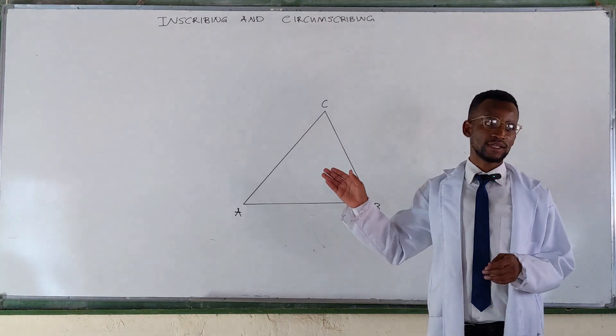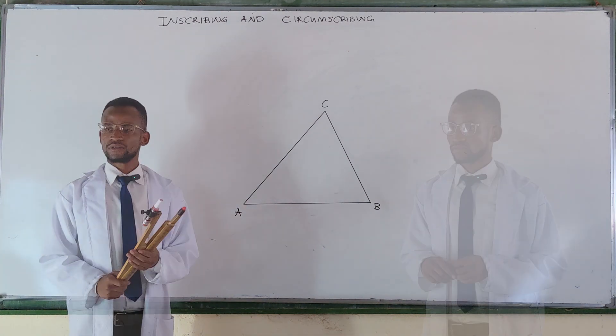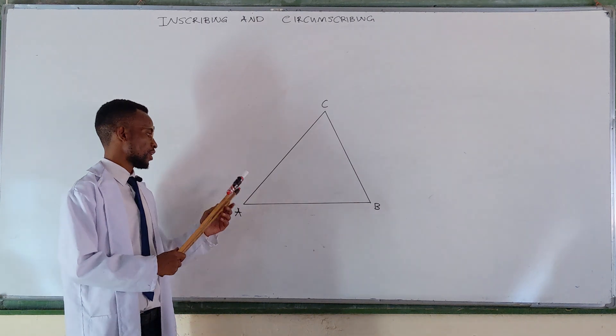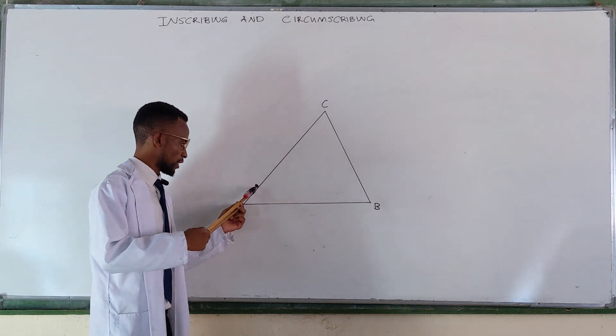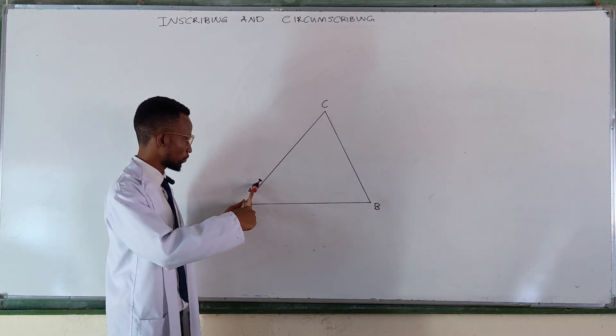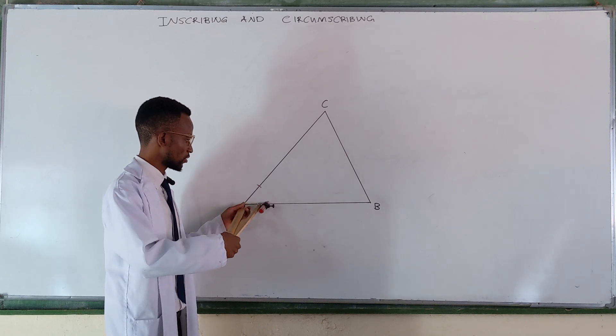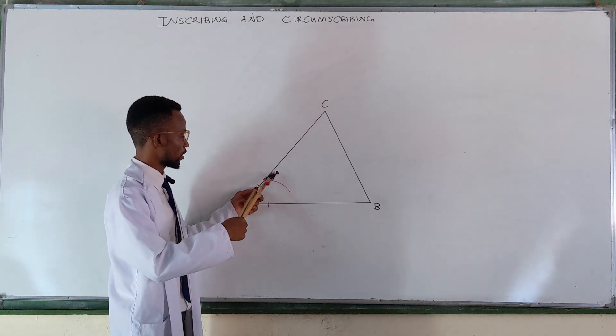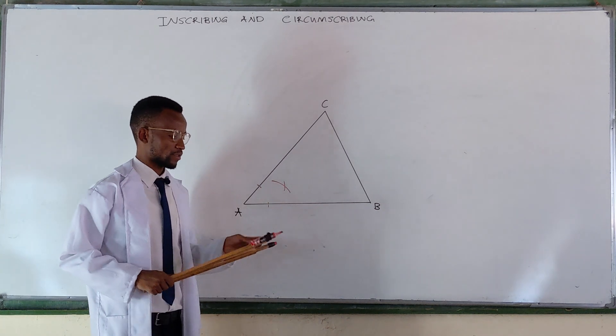So bisecting any two angles, you get your compass, open it to any convenient radius, place it at one angle, strike an arc, strike an arc from here, strike an arc from there, strike another arc.